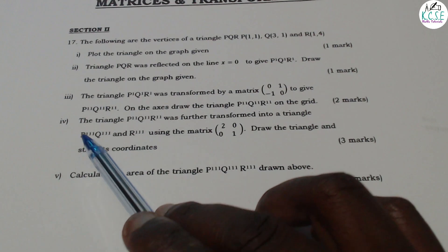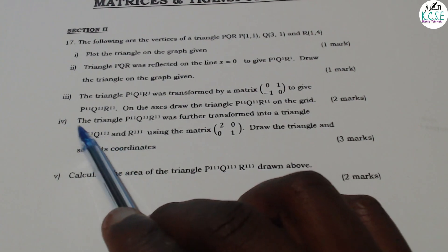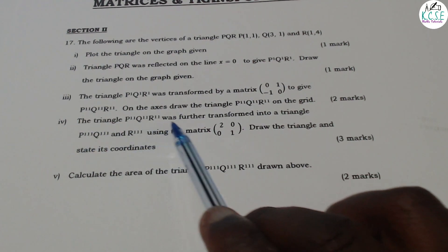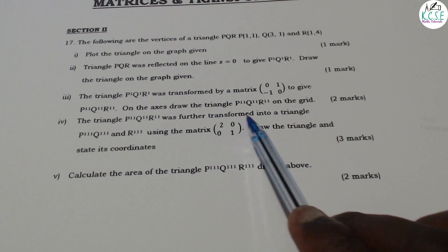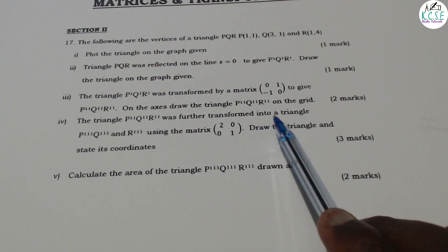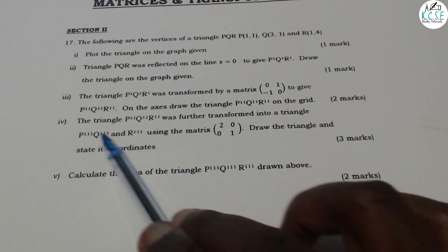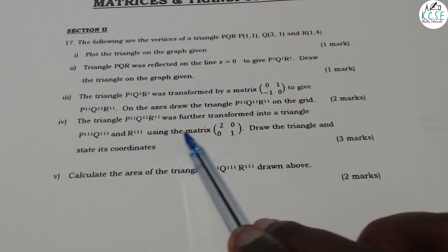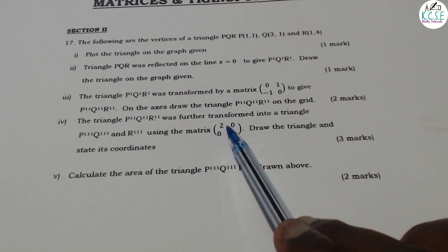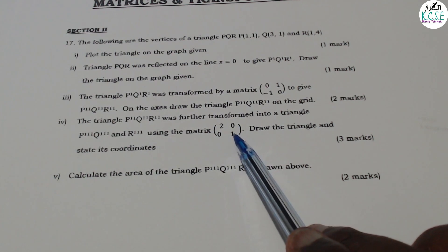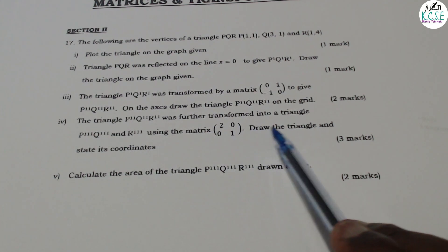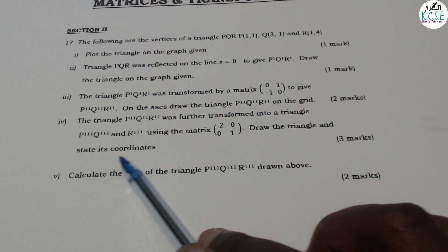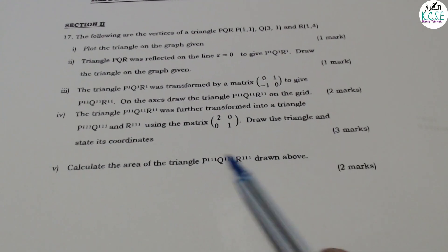Part 4: The triangle P2, Q2, R2 was further transformed into triangle P3, Q3, R3 using the matrix [2, 0; 0, 1]. Draw the triangle and state its coordinates — 3 marks.